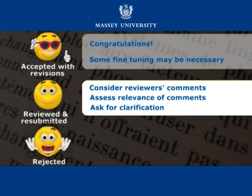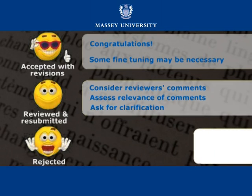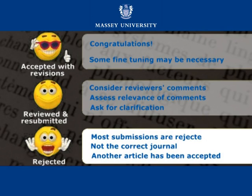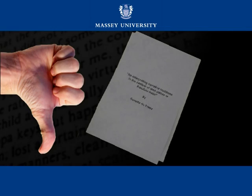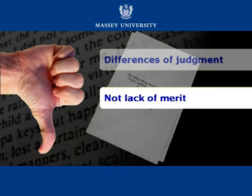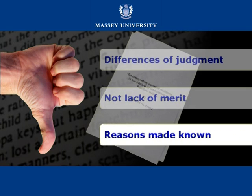The third scenario that writers experience is rejection. This is also by far the experience of most submitters. This, however, does not necessarily mean that your work is bad. Two possible reasons for the rejection are that the journal was not the right one for your article, or another article similar to yours had already been accepted. Rejections are often the result of differences in judgment on the part of editors, rather than on a lack of merit of the article. But whether the rejection is outright or conditional, you will be given the main reasons for the decision.